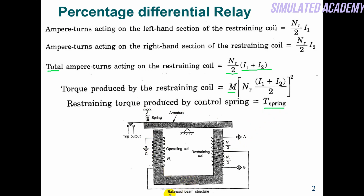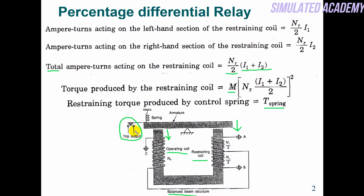Now let me explain the balance beam structure — how does this work. Here is the restraining coil and this is the operating coil, and this is the contact that will generate a trip or not-trip signal. This is a spring and this is the armature. If the restraining coil current is higher — like during a through fault — more current passes, it attracts the beam down, and this contact becomes open, so no trip signal is generated. If the operating coil current is higher, it attracts the beam down, the contact becomes closed, and it generates a trip signal.